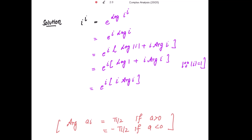So this is equal to e to the power i times: log of 1 is 0, so we are left with i times the principal argument of i. Since the real part a is 1, which is positive, the principal argument of i is π/2. So this is equal to e to the power i times i times π/2, which is e to the power i squared times π/2. Since i squared is negative 1, this gives e to the power minus π/2, which is the required principal value of i to the power i.